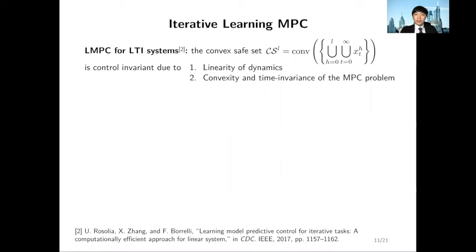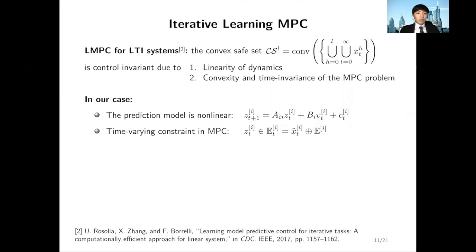The closest work that allows iterative learning in the context of predictive control is the learning MPC method proposed by Rossolli et al. The core result is that the convex hull of realized states is a control invariant set if your system is LTI and the MPC problem is time invariant. By using this convex hull as the terminal set in MPC and updating it with more realized states, control performance of the closed-loop system will improve over iterations.